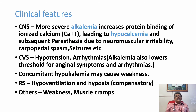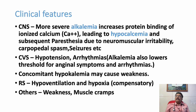Clinically, severe alkalemia increases protein binding of calcium, leading to functional hypocalcemia. Symptoms include paresthesia especially around the mouth and fingers, carpopedal spasm, neuromuscular irritability, seizures, and in severe cases, arrhythmias. Concomitant hypokalemia can cause weakness, ECG changes, and arrhythmias. Respiratory findings include hypoventilation, hypoxemia, and respiratory muscle weakness. Weakness and muscle cramps may also be present.